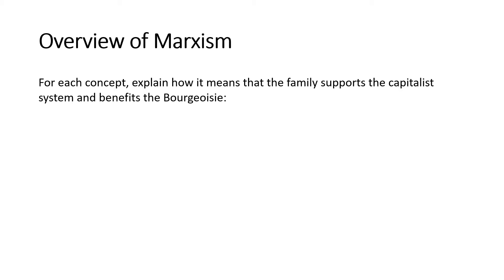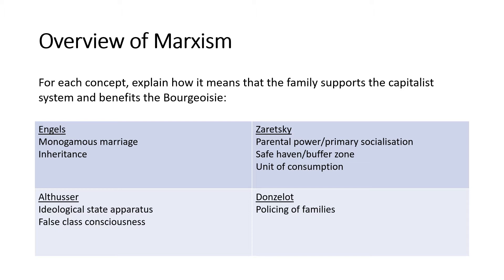Like I would normally do a starter in a real lesson, grab yourself a piece of paper and a pen and have a look at this table here. In this table is all of the key terms relating to each of these key thinkers. I'd like you to explain how each concept means that the family supports the capitalist system and benefits the bourgeoisie. Pause the video and write these things down - off you go.